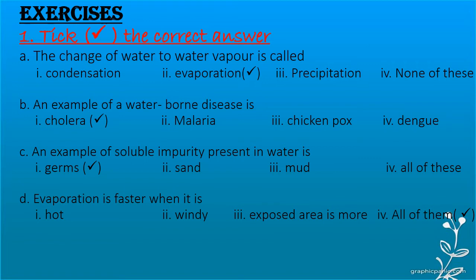Part C: an example of a soluble impurity present in water is germs, sand, mud, or all of these. The correct answer is germs, because sand and mud are insoluble impurities — they cannot be dissolved in water. So germs is the correct answer.